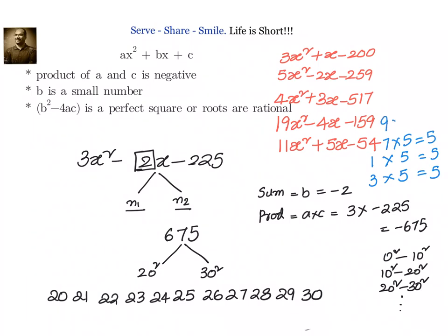Then 9 into 5 also will give me 5. Looking here, it should be 23, 25, 21, 25, 27, 25, or 29, 25.